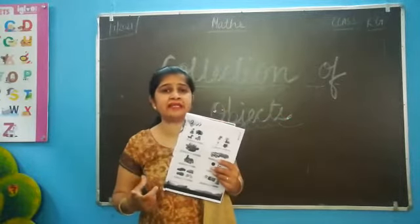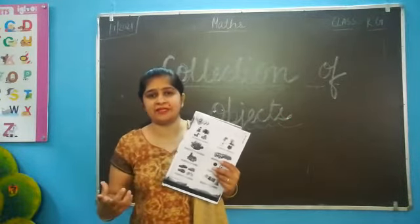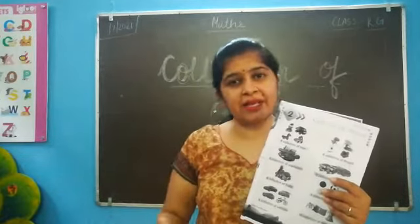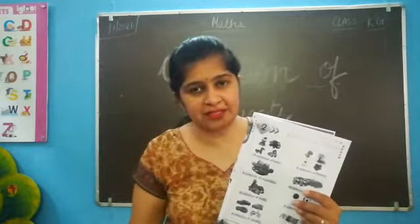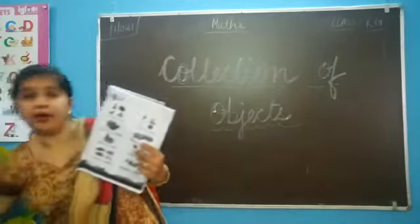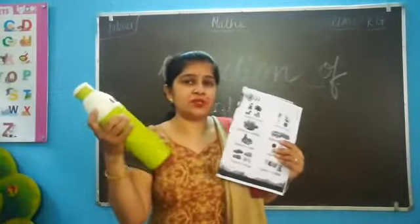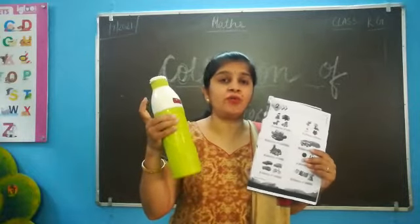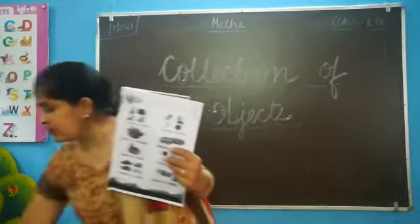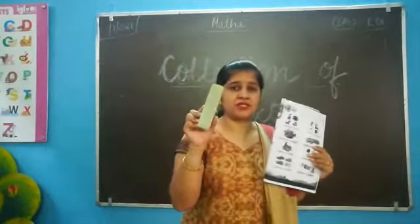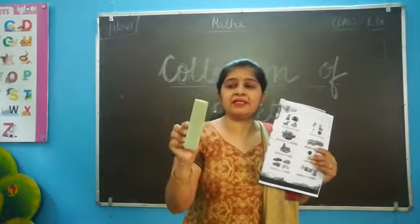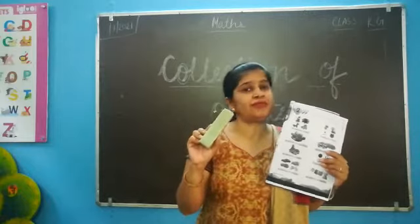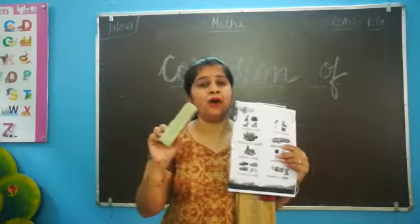Ab objects me kya aate hai? Objects kisi ko bhi keh sakta ho — books ko keh sakta hai, furniture ko keh sakta hai, bags ko keh sakta hai. Like, bhout saari bottles ho gai — a group of bottles, collection of bottles. There are many dusters — like this. Toh ye kya ho gaya? Group of dusters, that is collection of dusters. Dusters is an object.